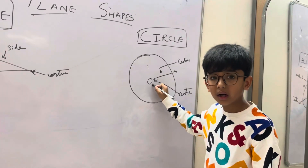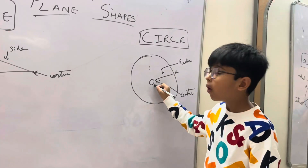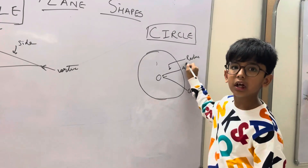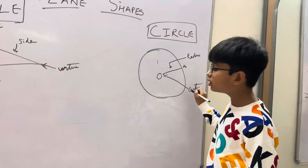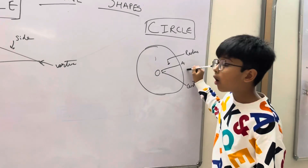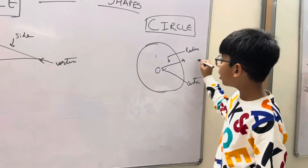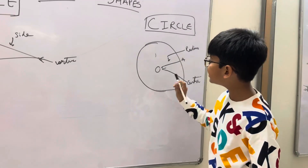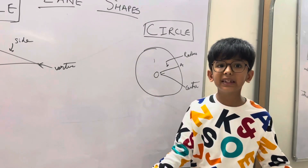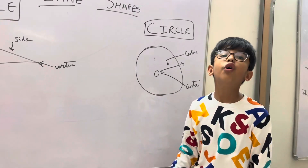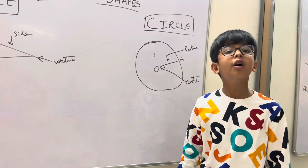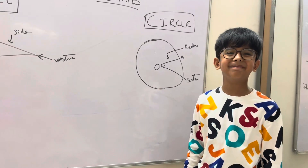A circle has no vertices and no sides. O is the center of the circle. OA is the radius — the distance of any point on the circle from the center. Some examples are clock face, letter O, wheel, and plates.